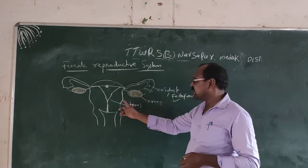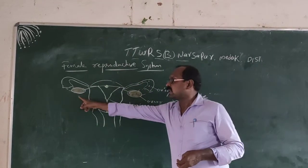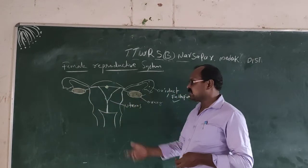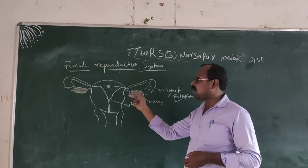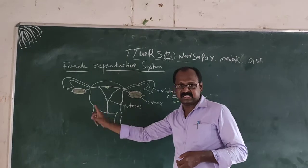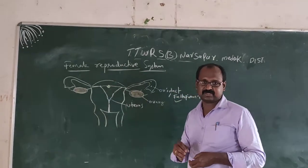There is a left ovary and a right ovary. Every month, the ovaries alternately release eggs.